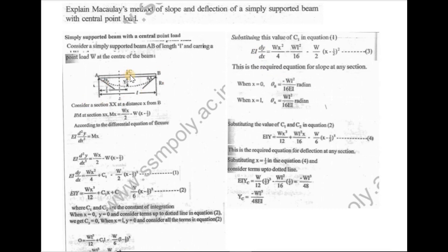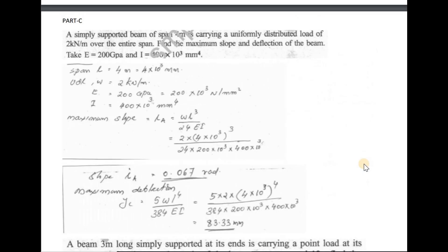Substituting the boundary conditions, at x = 0 the slope θ_A and at x = L the slope θ_B gives WL²/16EI. The maximum deflection at x = L/2 substituted into the expression gives WL³/48EI. These confirm the standard results for a simply supported beam with central point load.